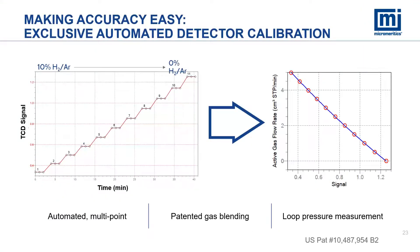When needed, the conversion of the TCD signals for quantitative analysis is automated. The system automatically dilutes carrier and loop gas with a blending valve for an 11-point calibration curve. It also measures loop temperature and pressures, which can contribute as much as 5% error. This does not require analysis using multiple runs of pure metal oxides or standards to generate the calibration.